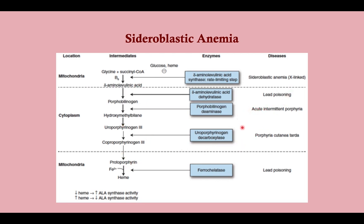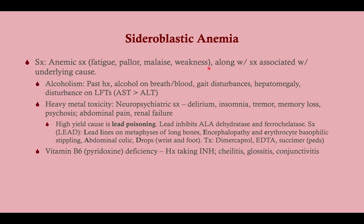Keep in mind there are other conditions associated with the heme production pathway — the porphyrias — which come up on Step 1. Symptoms are going to be anemic symptoms plus those from the underlying cause. For alcoholism, look for alcohol on breath, gait disturbances, hepatomegaly from cirrhosis or alcoholic liver disease. In alcoholic liver disease, AST is elevated greater than ALT.